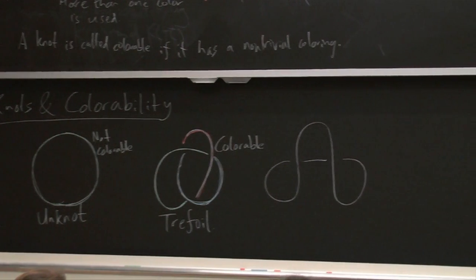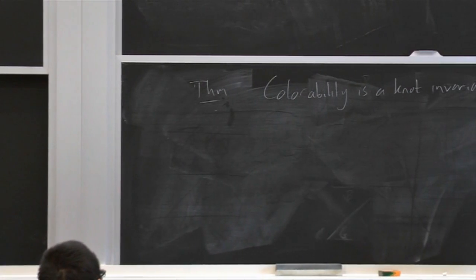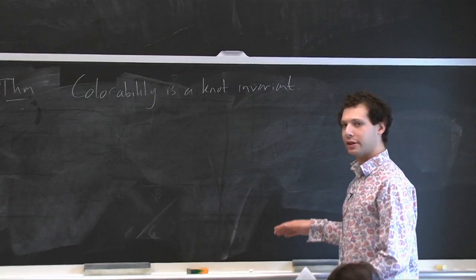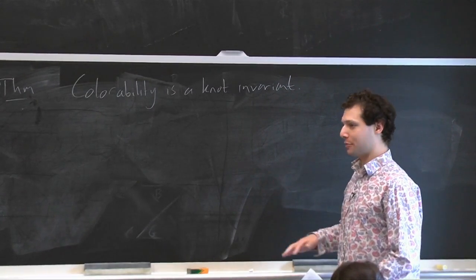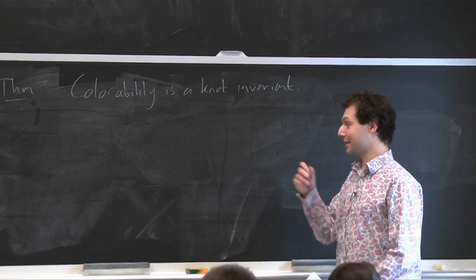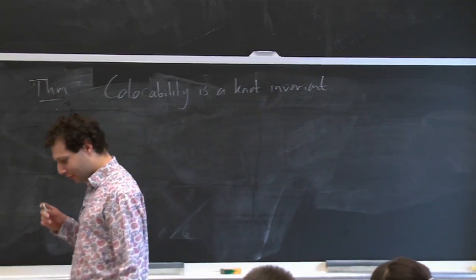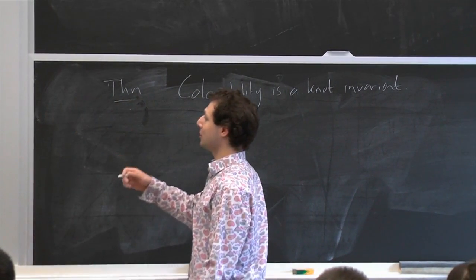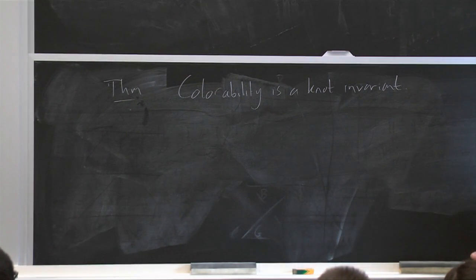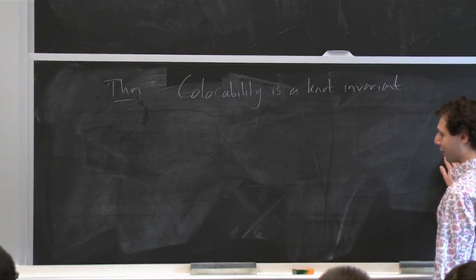So how do you prove that? Well, because of Reidemeister's theorem, it's enough to show that each one of the Reidemeister moves doesn't change the property of colorability. Because if two diagrams represent the same knot, you can get from one to the other using Reidemeister moves. And if colorability isn't changed at each step, then it's not changed over the whole process. So at this point, to prove the theorem, you have to split into a lot of cases for each Reidemeister move, and check that colorability is conserved. So it would be tedious to do all that. But let me show you a couple of cases to give you a flavor.